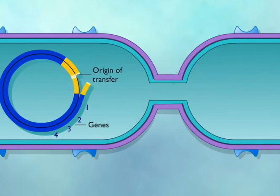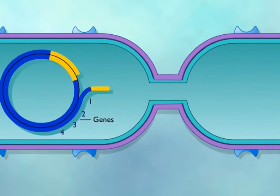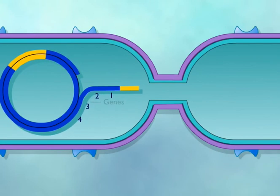Gene 1, which is closest to the origin, is transferred first. Segments of the integrated plasmid are at the beginning and the end of the DNA being transferred.